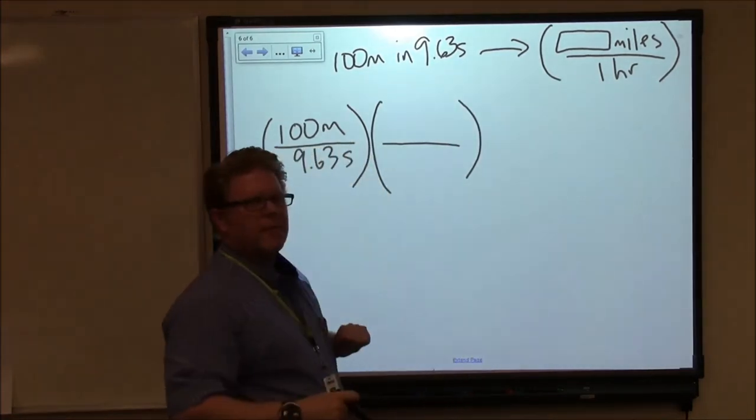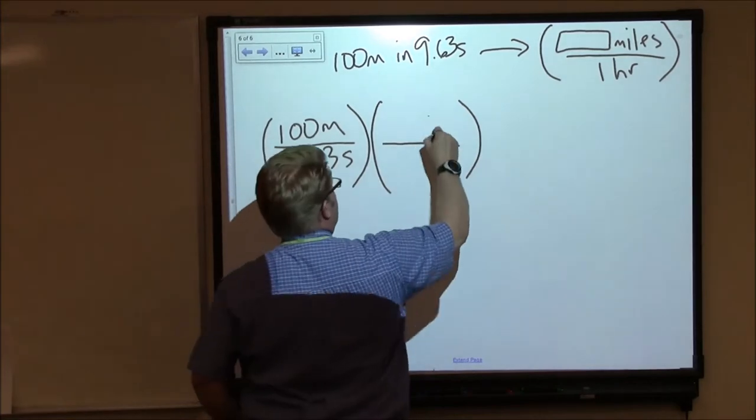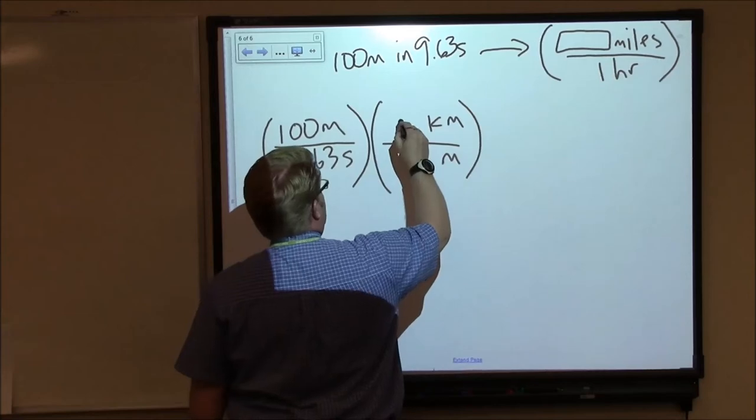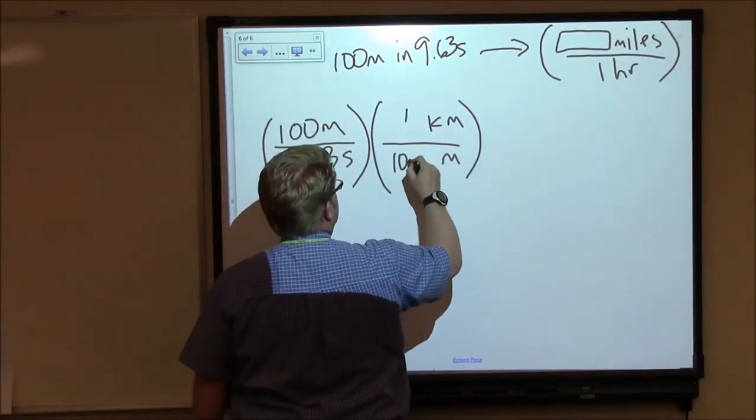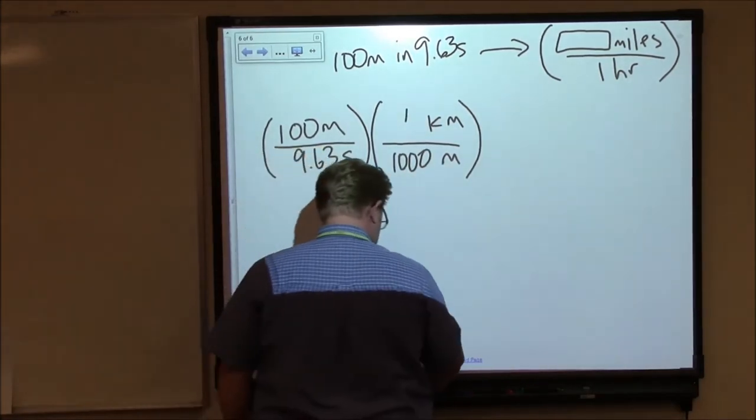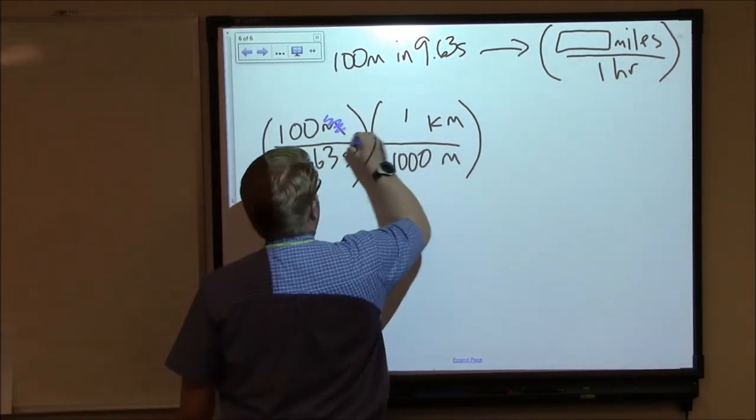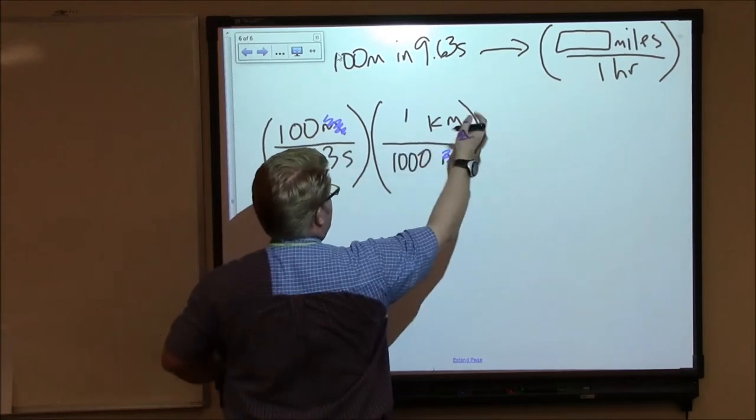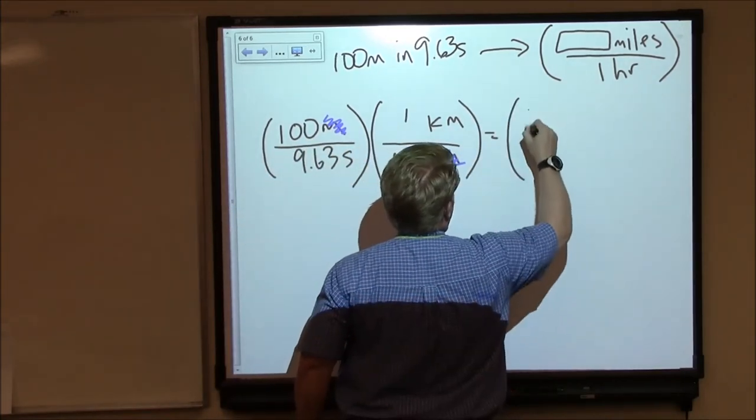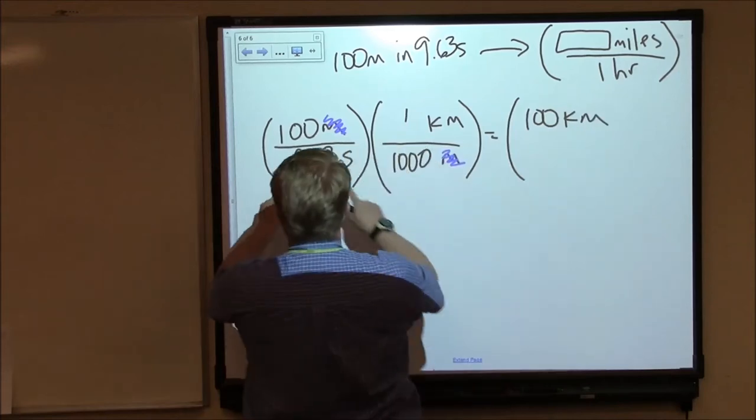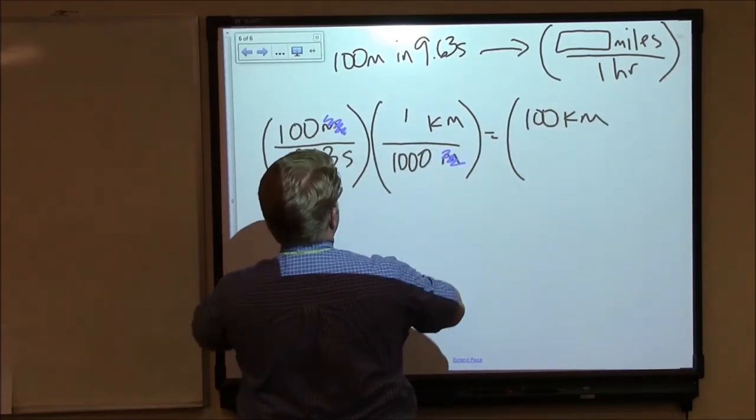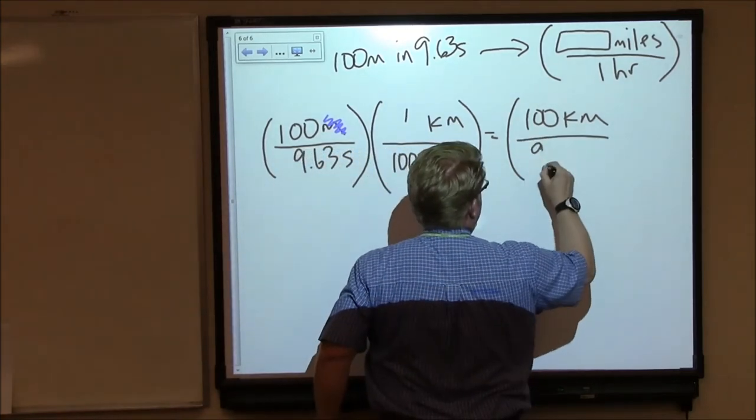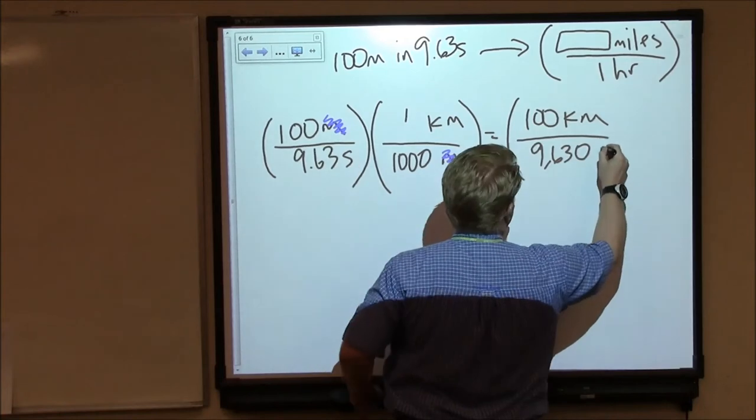I want to get rid of meters and replace it with kilometers. So kilometers is going to go on top. Meters is going to go on the bottom. Now remember that in one kilometer, there are 1,000 meters. So that will allow me to cancel my meters. And I'll have 100 times 1 or 100 kilometers in 9.63 times 1,000. That sounds like 9,630 seconds.